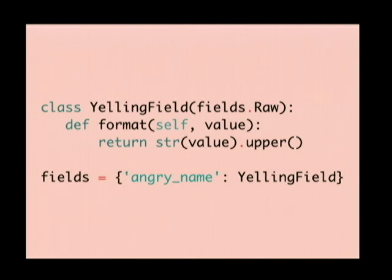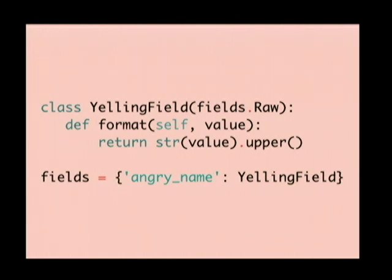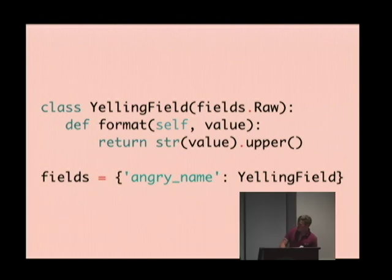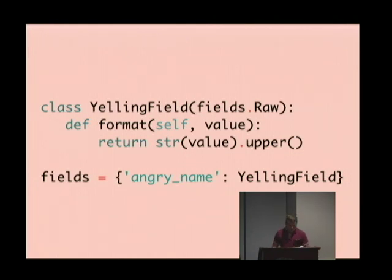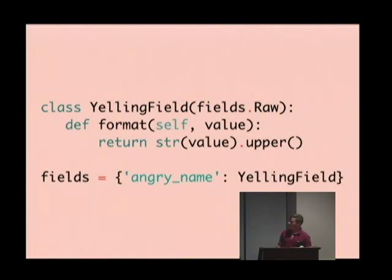Output is pretty similar — we subclass the base field class, in this case called the Raw field class. Then we're going to make a yelling field, which will just uppercase every string it finds. All you have to do is define a method called format that takes the value and returns the marshalled representation of it. Then very similar to how we did everything else in our output fields example, we just use our field name in place of the built-in fields.